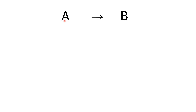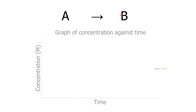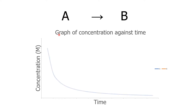Let's consider a hypothetical reaction where A reacts to form B. The following shows the change in concentration of reactant A. As time elapses, the concentration of A decreases until all of the reactants are used up. By measuring the gradient of this curve, we can determine the rate of reaction.